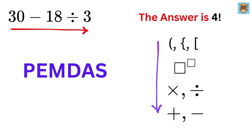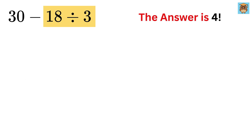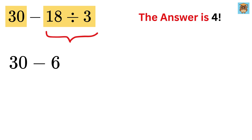So instead of simply doing the operations from left to right, we must first handle the division before the subtraction. This means that we should divide 18 by 3 first, and then subtract that result from 30, which will give us the correct answer. That means we take 18 divided by 3, which is 6, and then do 30 minus 6, which equals 24.